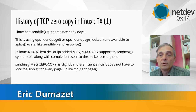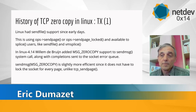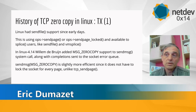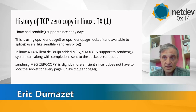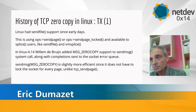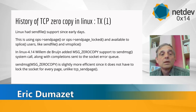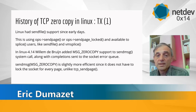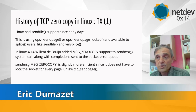On top of splice, you can implement VM splice, which is basically a way to implement zero copy not using a source stored on disk, but a source stored in memory. Back in Linux 4.14, William added a MSG_ZEROCOPY flag to the generic send message system call.